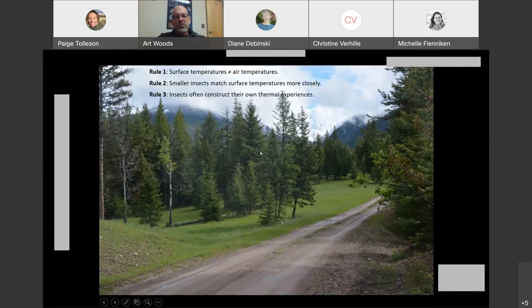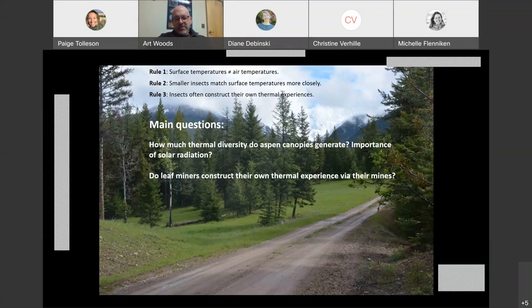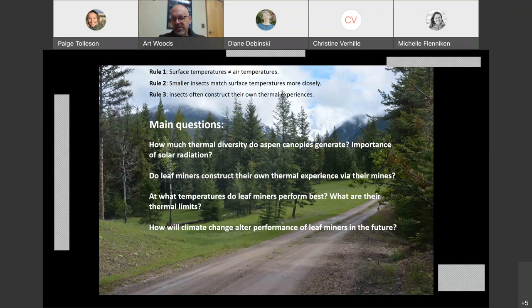I'm going to apply these rules to this site in the Sealy Swan Valley where I've been working for the last four years. It's an MPG property. MPG is a local conservation group here in Missoula that owns a big ranch in the Bitterroot Valley and then a much smaller, about 200 acre ranch, conservation ranch in the Sealy Swan. There's a lot of aspens there. I'm going to ask these following questions. How much thermal diversity do aspen canopies generate and what's the importance of solar radiation? Do leaf miners construct their own thermal experience via their mines? What's the thermal performance curve of leaf miners and what are their thermal limits? Can we put all of this information together to predict what's going to happen to leaf miners as climates change in Montana?